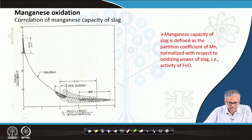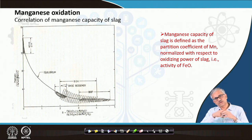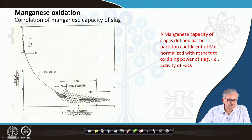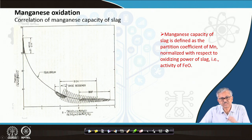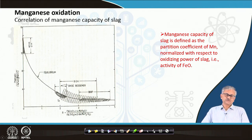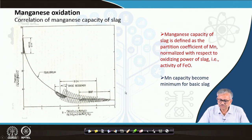In acidic conditions (such as the acid open hearth furnace), the manganese capacity of the slag is maximum because the acidic slag can retain the basic MnO. When the slag becomes basic (like in basic open hearth or BOF), the manganese capacity becomes very low. Therefore, under basic slag conditions, manganese capacity is minimum, and manganese reversion is likely. This is confirmed by data from textbooks such as Turkdogan's 'Fundamentals of Steelmaking.'